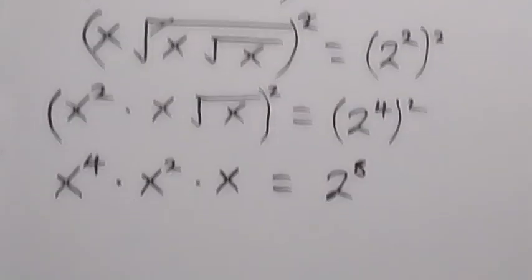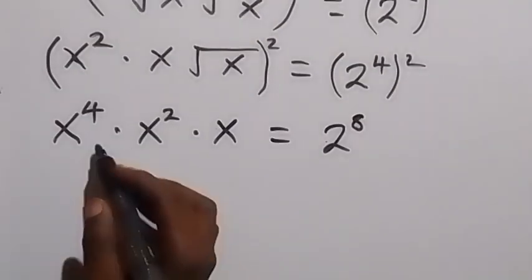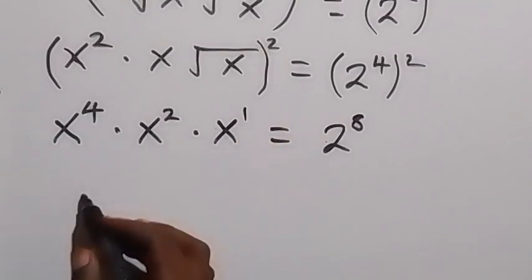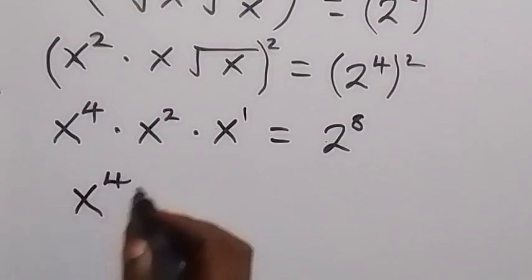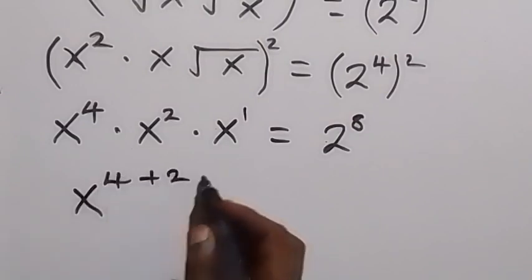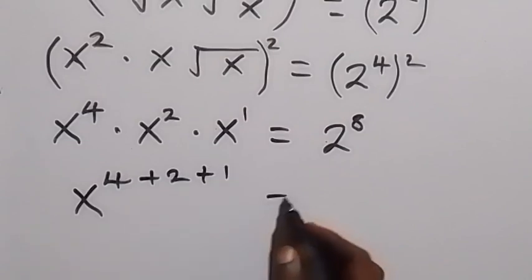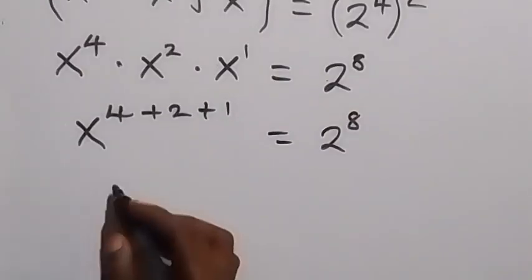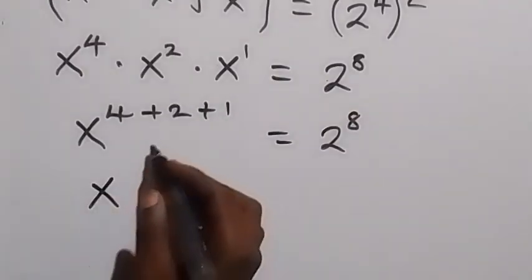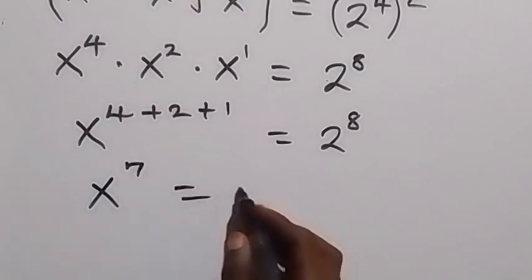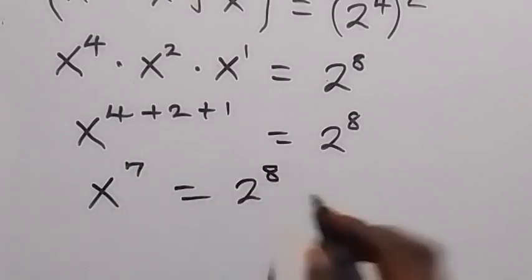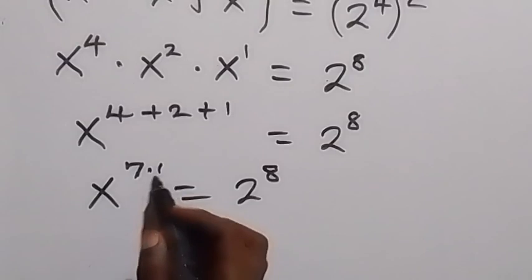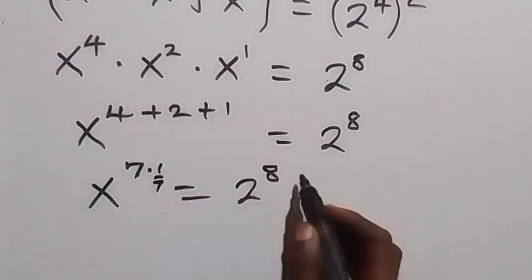Now on the left side we have the same base x, and applying the law of indices we have x raised to power 4 plus 2 plus 1, which equals 2 raised to power 8. So x raised to power 7 equals 2 raised to power 8. In the next step, we multiply both powers by 1 over 7 in order to cancel the 7.